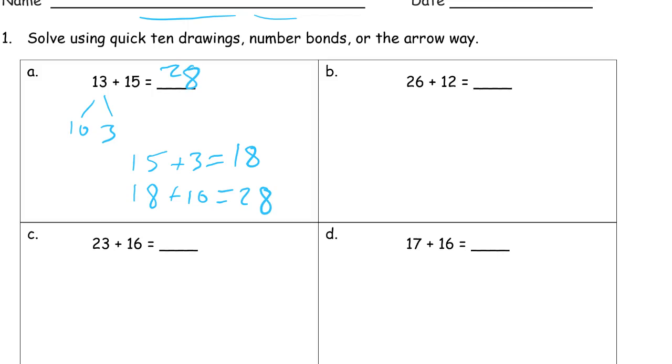And here we have another one that's like that. We have 6 and a 2. That's going to be less than 10. So let's break up the 12. 10 and 2. Let's say 26 plus 2, 28. Then 28 plus the 10, 38.